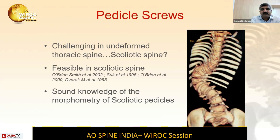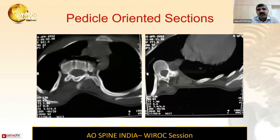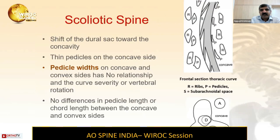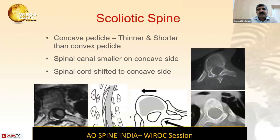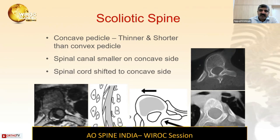The more challenging pedicle screws in the thoracic spine are in the deformed scoliotic spine. It is feasible but requires much more morphometric knowledge of scoliotic pedicles, as pedicle orientation is totally different and the pedicles may be in a wind-sweep configuration. Problems in the scoliotic spine include shift of the dural sac toward the concavity, thin pedicles on the concavity — sometimes almost no pedicle at all. The spinal canal is smaller on the concave side and the spinal cord is shifted. You must be very careful not to injure the cord. We now use intraoperative neurophysiological monitoring (IONM) and IONM screw stimulation to prevent these issues.